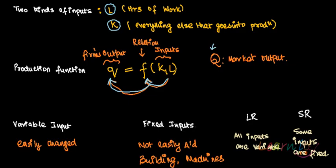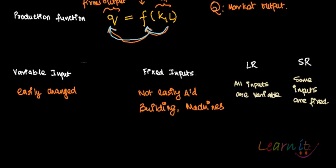Variable input is something which can be easily changed over time, while fixed input is something which cannot be easily changed. For example, labor — working 8, 6, 4, or 15 hours — is a variable input. However, even labor is not entirely variable; you can't increase or decrease labor at your own whims and fancies, as there are contracts signed.